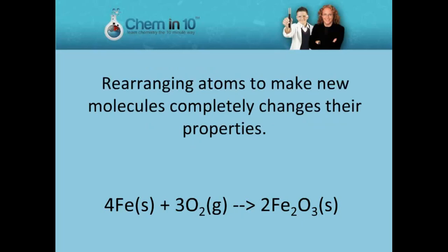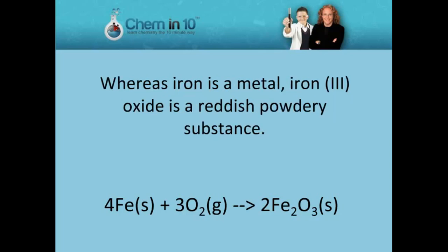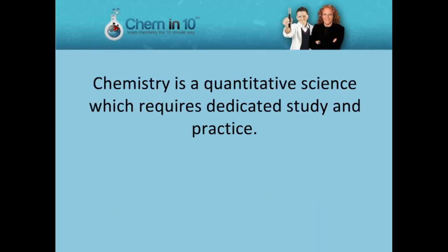Rearranging atoms to make new molecules completely changes their properties. Whereas iron is a metal, iron 3 oxide is a reddish, powdery substance.